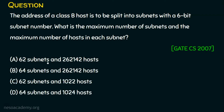Option A: 62 subnets and 262,142 hosts. Option B: 64 subnets and 262,142 hosts. Option C: 62 subnets and 1022 hosts. Option D: 64 subnets and 1024 hosts.